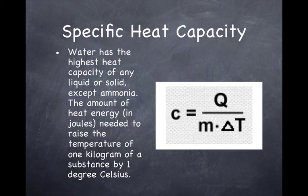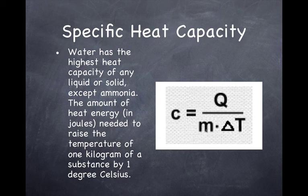It can also be described in joules per gram degree Celsius. Here you see the formula for specific heat capacity, represented by C equals Q — which is the amount of heat energy in joules — divided by m, where mass could be grams or kilograms. We use grams mostly in this course; once you get to Chemistry 30, you'll be using kilograms. Delta T is the change in temperature.